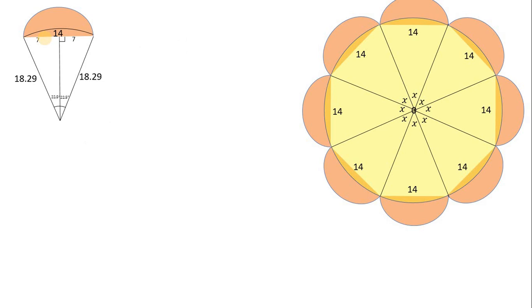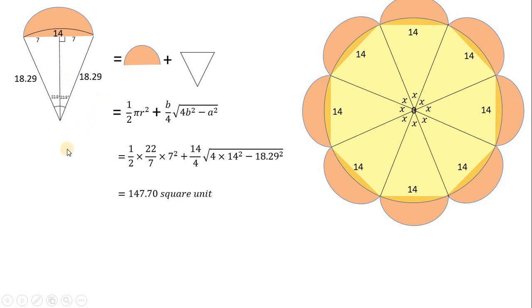The given sector is the area of the semicircle plus the isosceles triangle. The area of the semicircle is 1/2 π r² where r is 7. The area of the isosceles triangle is b/4 √(4b² - a²) where b is 14 and a is 18.29. Substituting these values and calculating, we get 147.70 square units, which is the area of each sector.